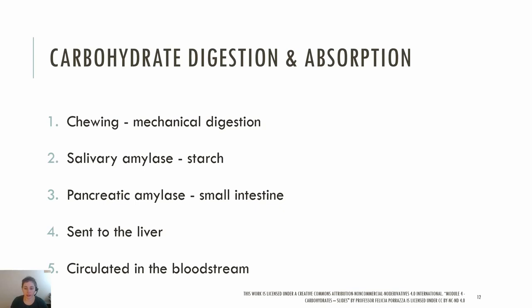We covered digestion previously, but let's take a closer look at carbohydrate digestion and absorption. When you chew, you are aiding in the breakdown of carbohydrates with mechanical digestion. Salivary amylase in your saliva helps to break down starch into polysaccharides and disaccharides. In the stomach, salivary amylase is inactivated and digestion of carbohydrate mostly stops until the small intestine. The small intestine is primarily where digestion of carbohydrates takes place, as pancreatic amylase and dextrinase work to break down polysaccharides into oligosaccharides. Disaccharides are digested by enzymes in the absorptive cells of the small intestine. Monosaccharides do not need further breakdown.